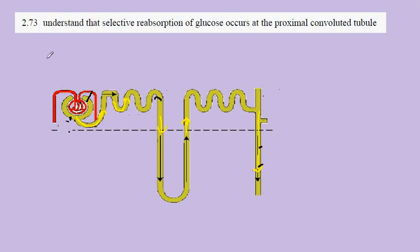GCSE Biology syllabus statement 2.73: we're looking at selective reabsorption of glucose in the proximal convoluted tubule.